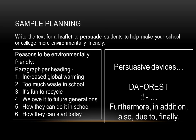Here's a sample plan I completed in about three minutes, taken from last year's exam: 'Write the text for a leaflet to persuade students to help make your school or college more environmentally friendly.' Underline the keywords straight away — leaflet, persuade, environmentally friendly. I then listed reasons to be environmentally friendly, one idea per paragraph: paragraph one on increased global warming with some statistics; number two, too much waste in school; number three, it's fun to recycle; number four, we owe it to future generations; ending with how they can start recycling today — a powerful concluding paragraph.